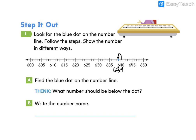Letter B wants us to write the number name. Let's go ahead and write it out. Remember, we're going to start with the greatest place value. Six hundred thirty-nine.